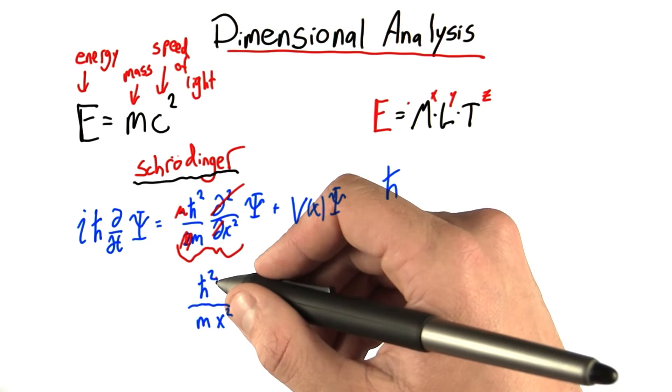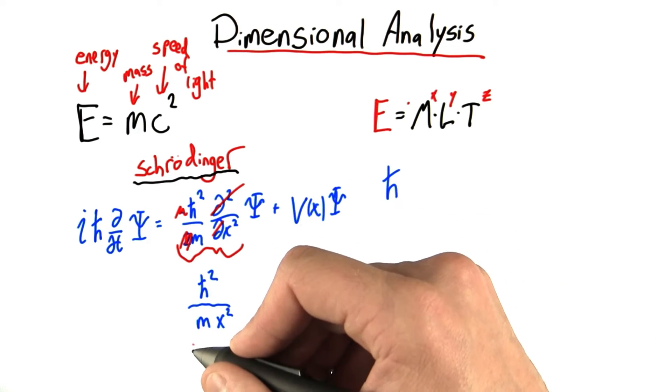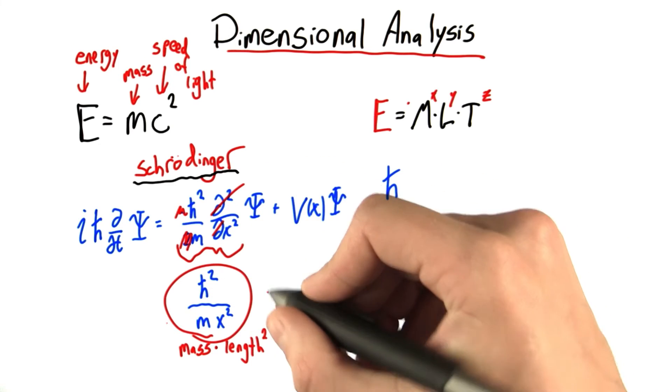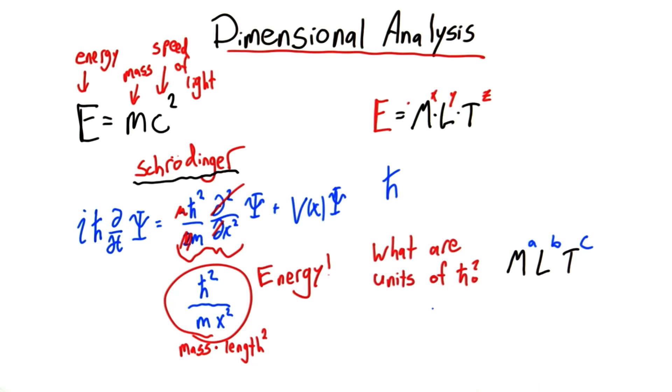We have h bar squared over something with units of mass times x, which is length, squared. If we know that this whole term has units of energy, then what are the units of h bar? We know we can write it as mass to the something, l to the something, and t to the something. I've called those somethings a, b, and c.